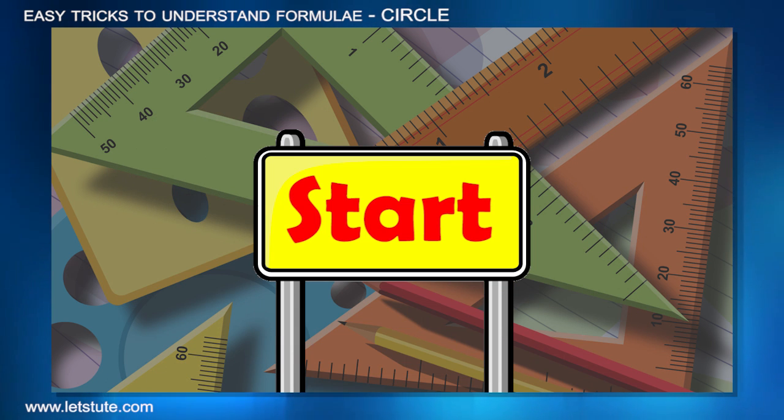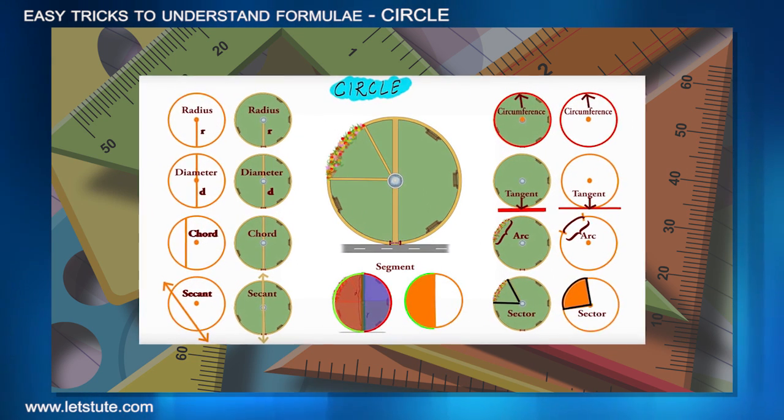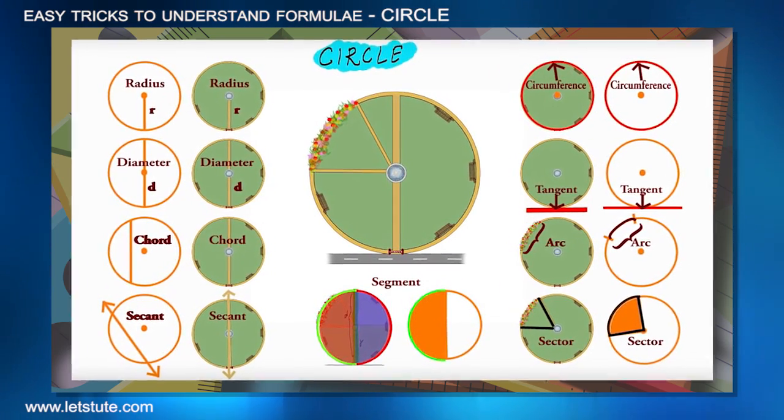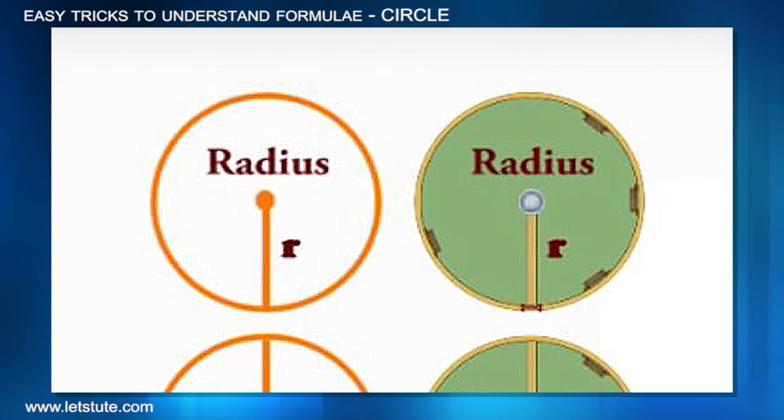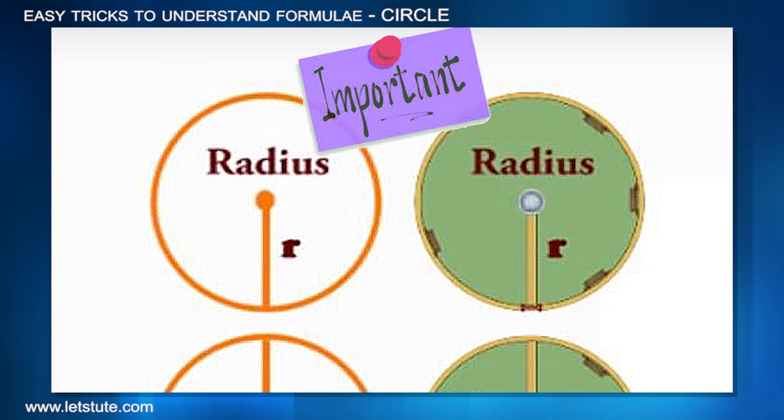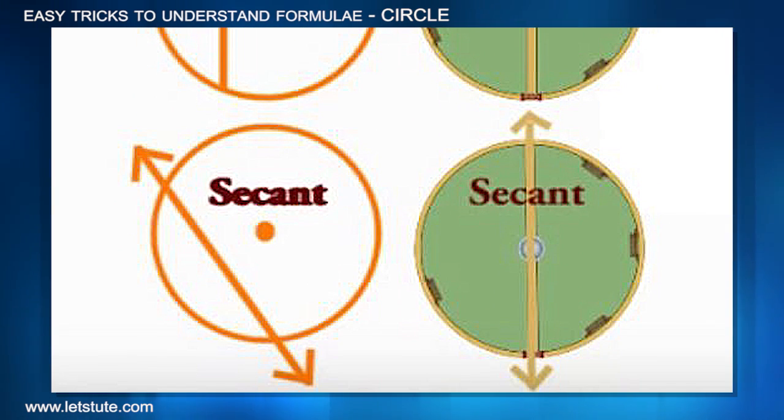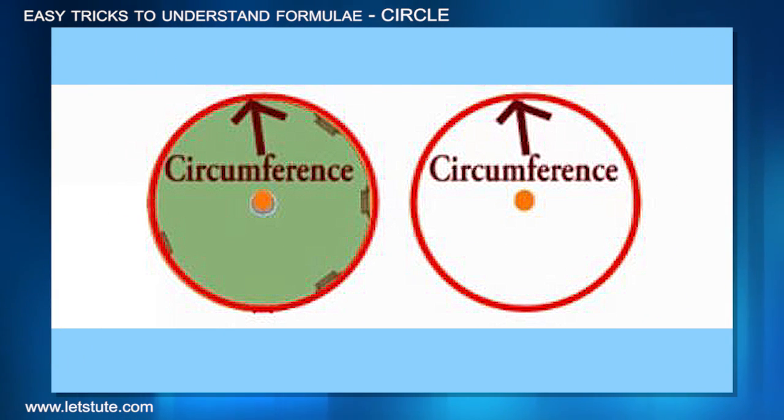Since the session is based on formulas, which parts of circles do you think need a formula to find? Here we have a chart which covers all the parts of circles. The first thing we see is a radius, which is the most important part. Next is diameter, chord, and secant—all these things do not need a formula to find.